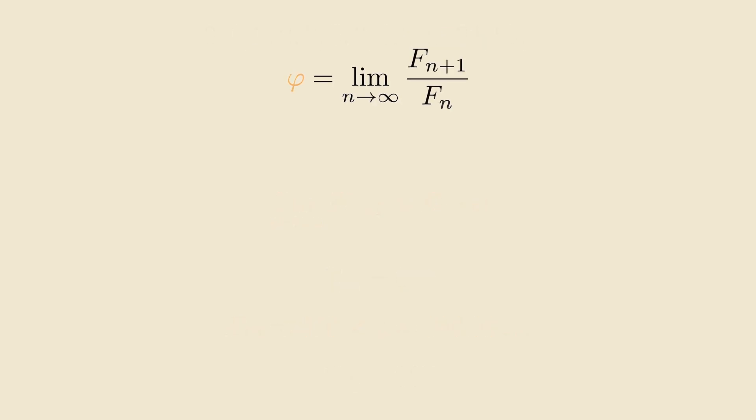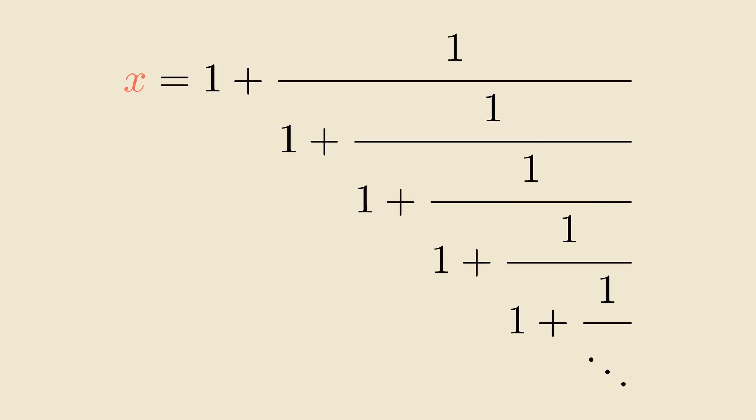We've seen how the golden ratio is related to the Fibonacci sequence. But what about these two infinite expressions? How do we know that they're both equal to the golden ratio? We'll start with the middle one. What we'll do is we'll set the whole thing equal to x, and we'll expand it out to show more of the infinite terms.